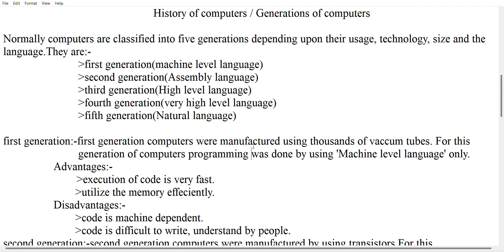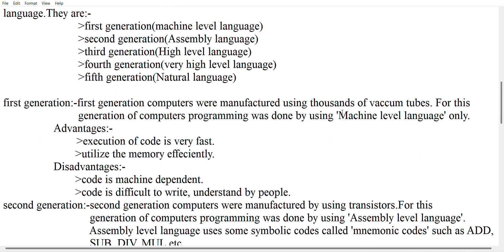Computers are classified into five generations depending upon their usage, technology, size, and languages. In the first generation, we use machine level language. In the second generation, we use assembly language. In the third generation, we use high level language. In the fourth generation, we use very high level language. In the fifth generation, we use natural language. Now let us discuss each generation.